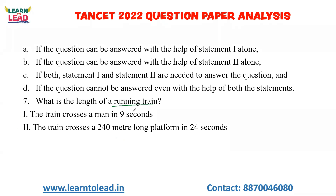Next question: What is the length of a running train? Statement 1: The train crosses a man in 9 seconds. Using time equals distance divided by speed, 9 equals length of the train divided by speed of the train. Statement 2: The train crosses a 240-meter long platform in 24 seconds.